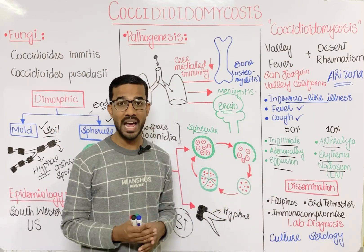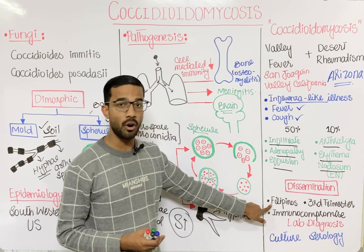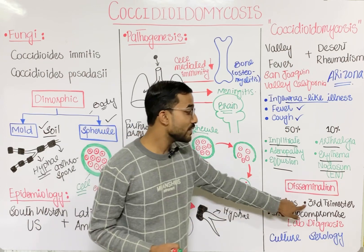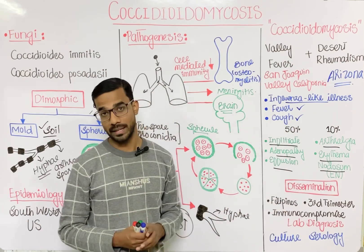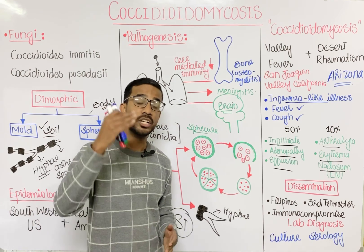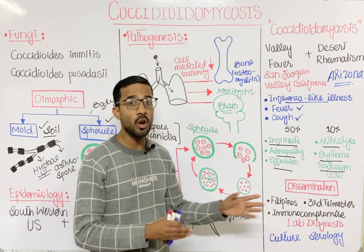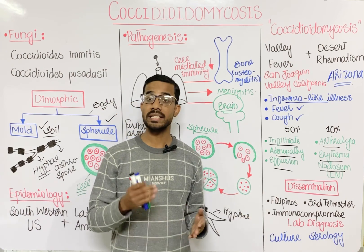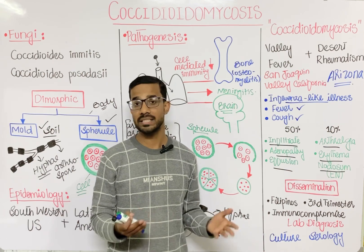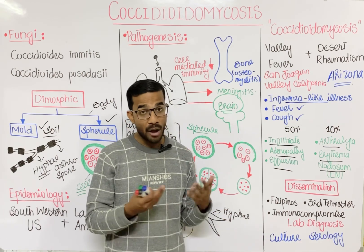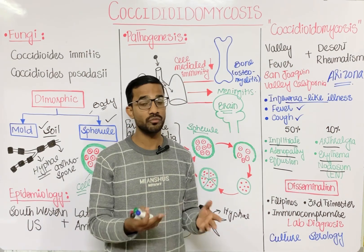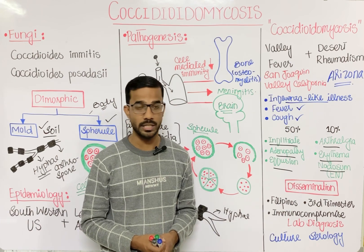Dissemination is more likely in Filipinos, African-Americans, and in patients in their third trimester of pregnancy due to low immunity. Immunocompromised patients — including AIDS patients, transplant patients, and cancer chemotherapy patients — have increased chances of dissemination of coccidioidomycosis due to low cell-mediated immunity.